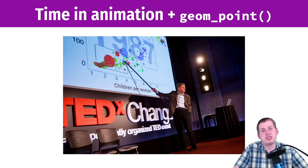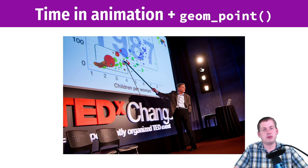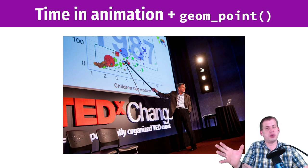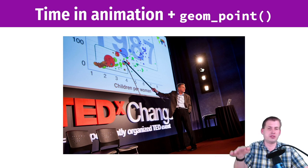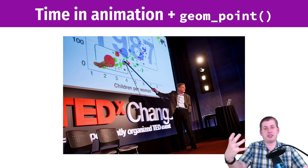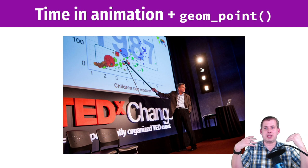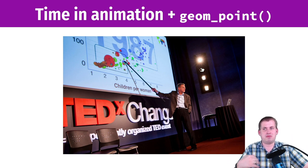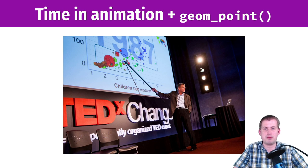You can also animate with time. This is the Gapminder TED talk — the four-minute video Hans Rosling made. In that case, time was mapped onto the animation itself. It wasn't on the x-axis or the y-axis, because those had GDP per capita and life expectancy. The way they visualized time was to essentially have a large number of different facets and animate between each of them — that's how we get the time-based animation.